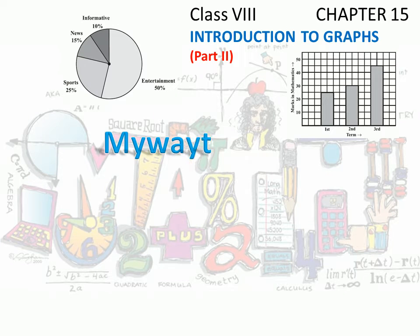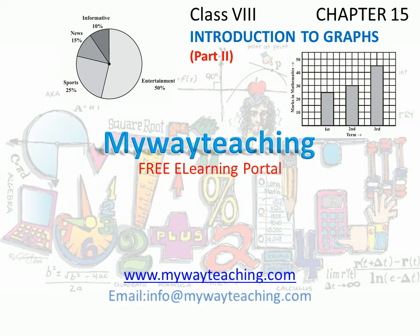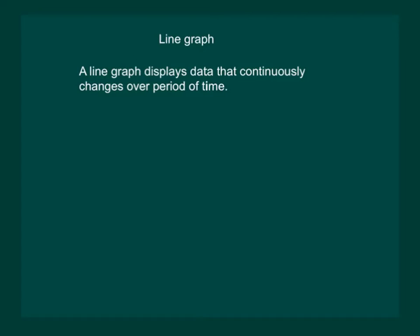Hello friends, this video is brought to you by MyWayTeaching.com. Line graph: A line graph displays data that continuously changes over period of time. That means that we use a line graph whenever things are changing with period of time.